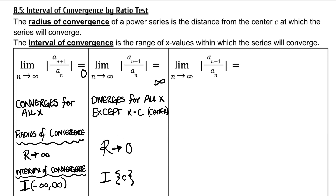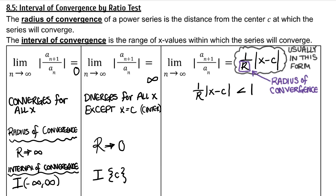If our outcome of the ratio test is (1/r)|x − C|, and it will usually appear in this form, then we can solve for our radius of convergence. The result of the ratio test must be less than 1 in order to have a convergent series. The r in this formula stands for radius of convergence, which is convenient. We just need to solve for x to find the interval of convergence.